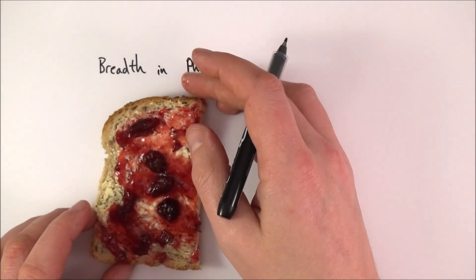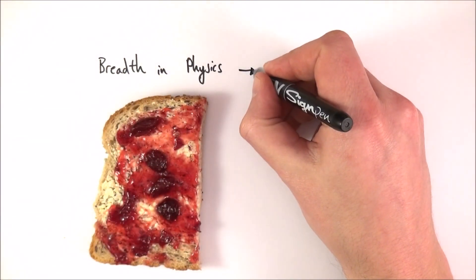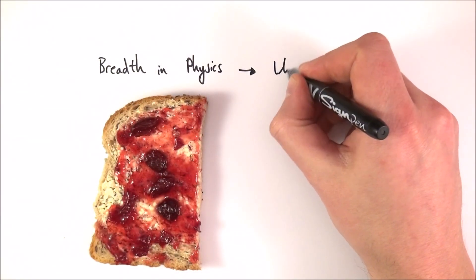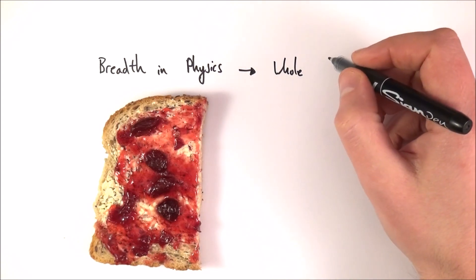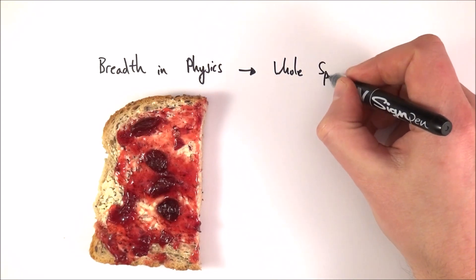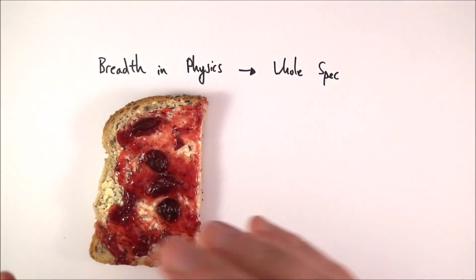So first of all we have breadth in physics. Basically this is questions from across the whole specification, so that means modules 1, 2, 3, and 4, and it could be all sorts of different questions.